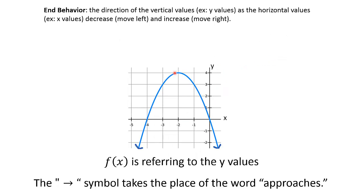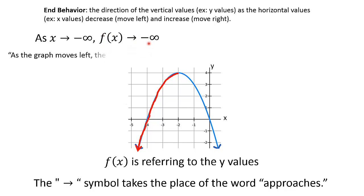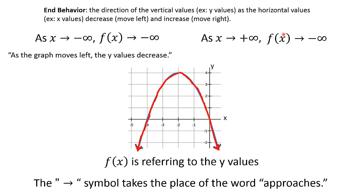Here's another example where our parabola is flipped over and we're opening downwards, but we do the same stuff. As x approaches negative infinity, what's happening to our y-values? In this case, they're going downwards, so f(x) approaches negative infinity, and we can say as the graph moves left, the y-values decrease. Now as x approaches positive infinity, what's happening to our y-values? They're decreasing, so we'd say f(x) approaches negative infinity. In other words, as the graph moves to the right, the y-values decrease.